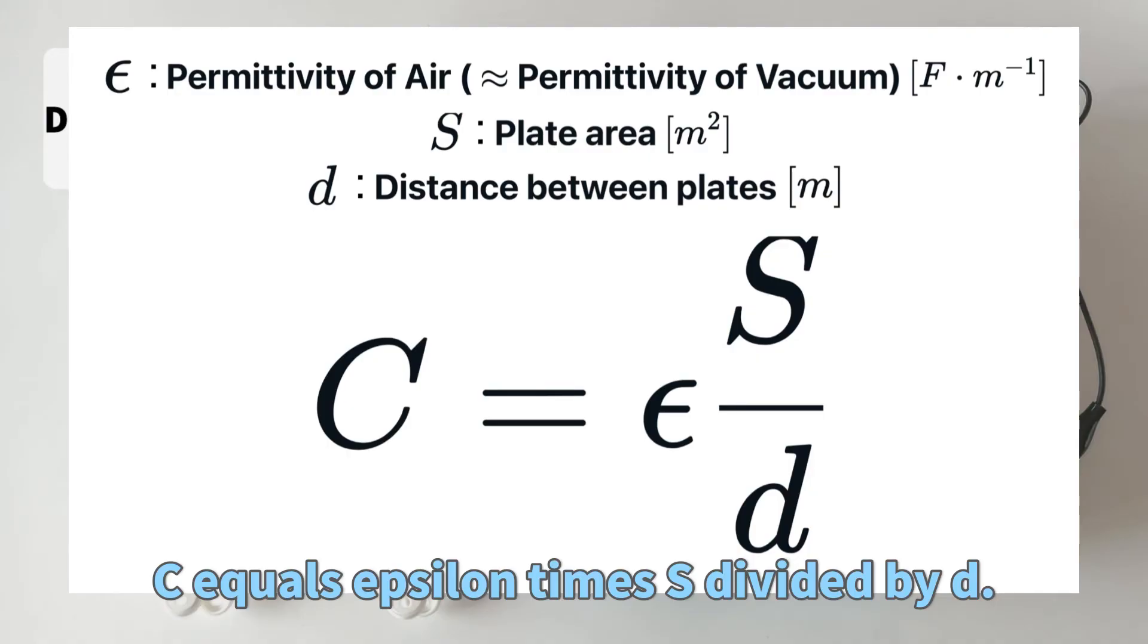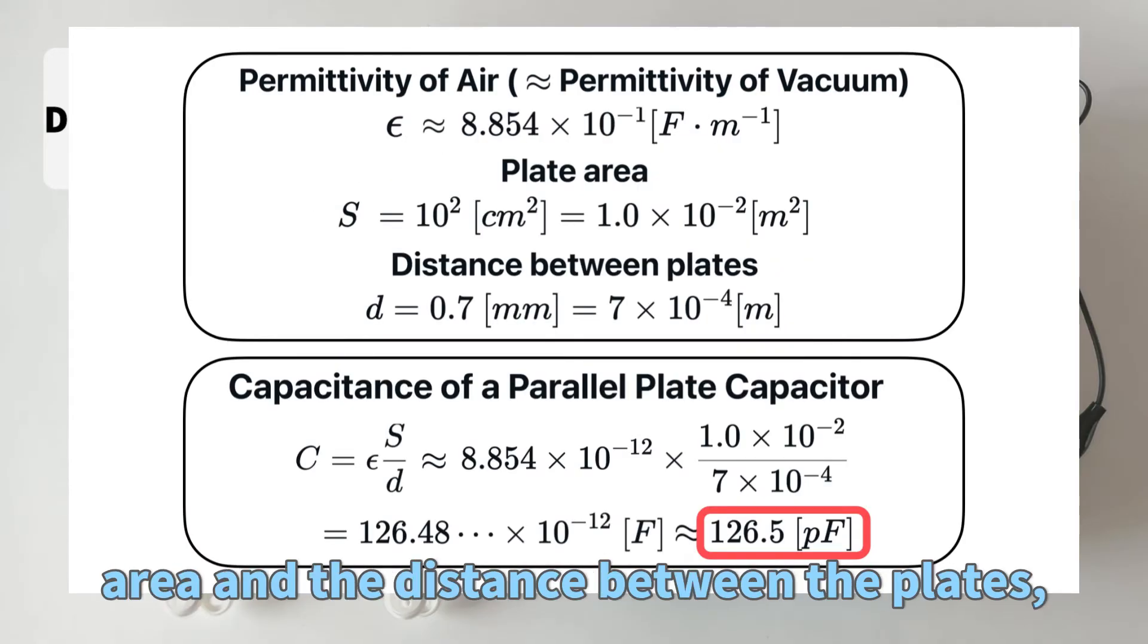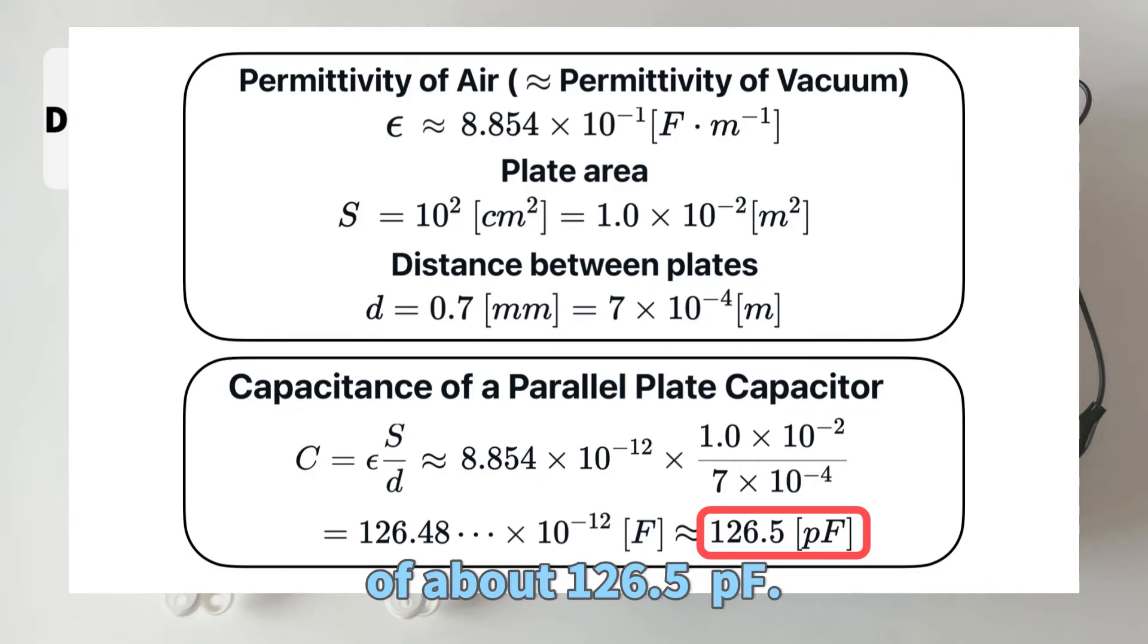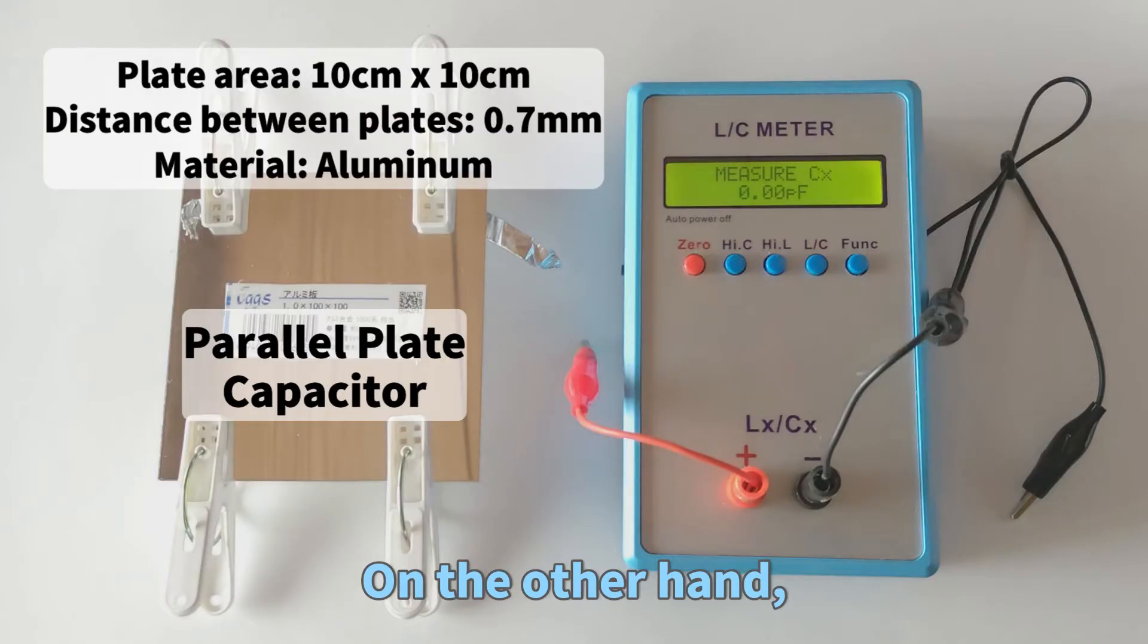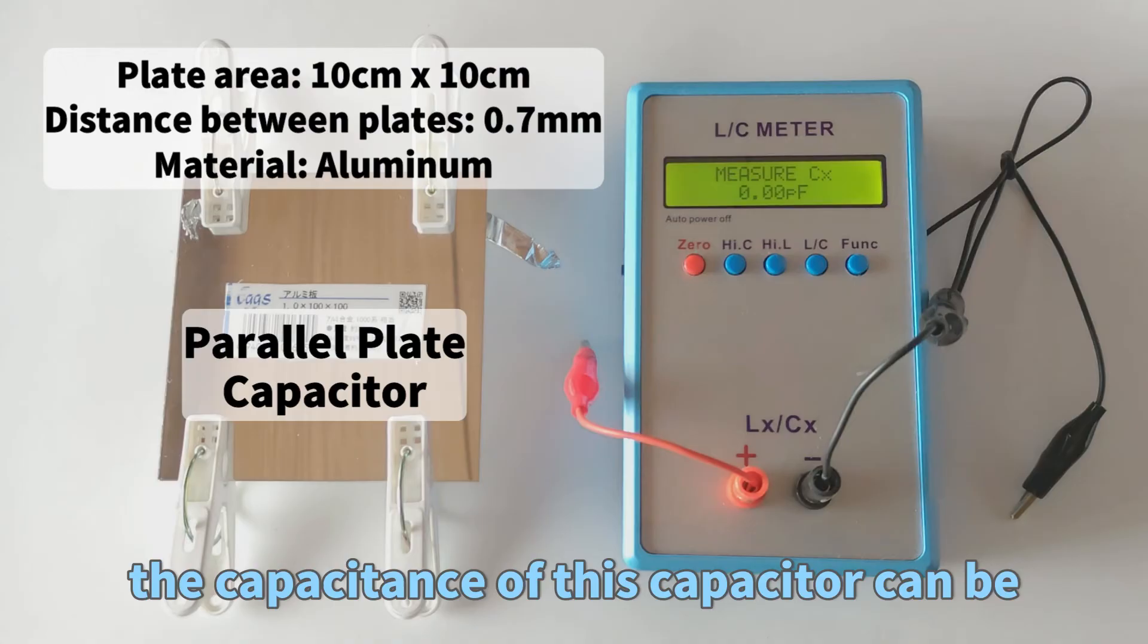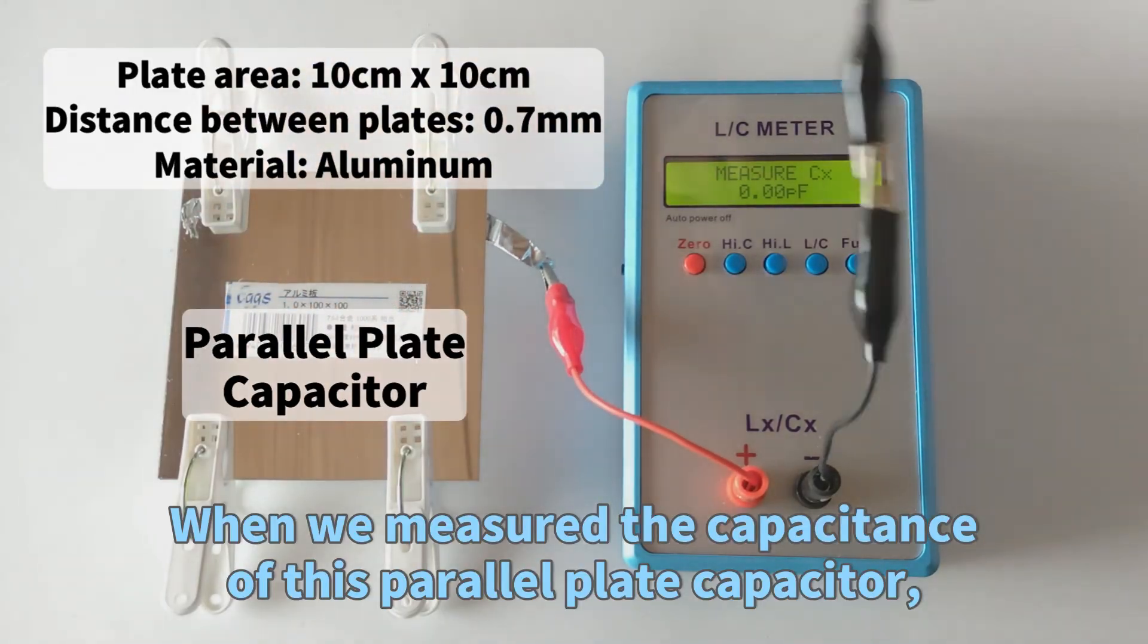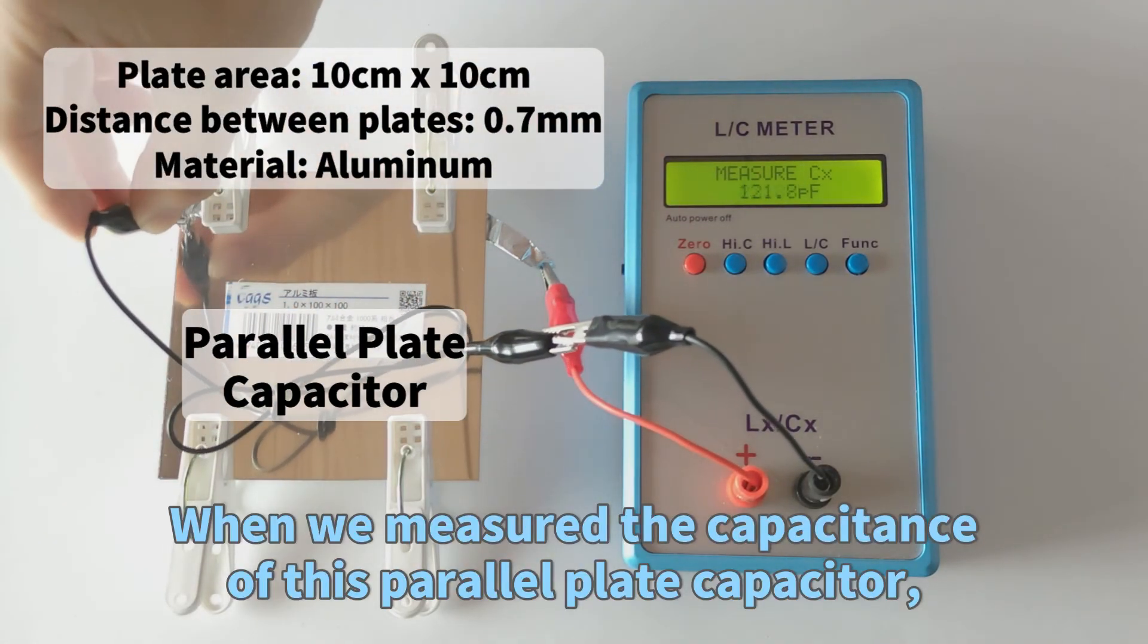By plugging in the values for the plate area and the distance between the plates, we get a theoretical capacitance of about 126.5 picofarads. On the other hand, the capacitance of this capacitor can be measured using the LC meter on the right side of the screen. When we measured the capacitance of this parallel plate capacitor, it was displayed as 121.6 picofarads.